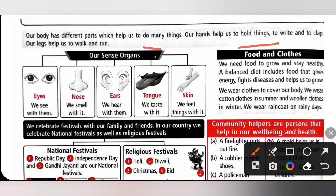Our legs help us to walk and run. And we have 5 sense organs, they are eyes, nose, ears, tongue and skin. We see with eyes, we smell with nose, we hear with ears, we taste with tongue and then we feel things with skin.